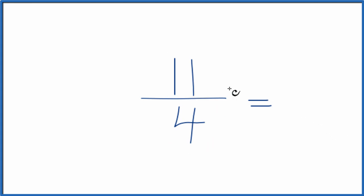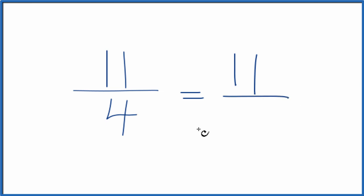So what we need to do is find a number that goes into both 11 and 4 evenly. The thing is, the only number that goes into 11 and 4 evenly is 1. Divide 11 by 1, you get 11. Divide 4 by 1, you get 4. And that's what we started with. What that means is the fraction 11 fourths is already simplified. We can't reduce it any further.